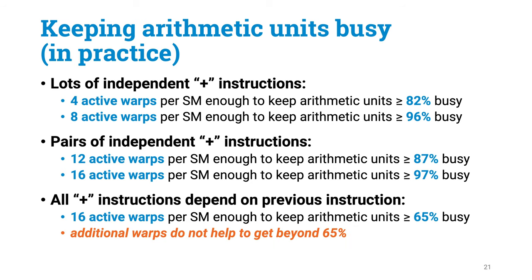You check the number of active warps, look at how much instruction-level parallelism there is, do the math, and what you get is usually at least 80% of what you would expect, often more than 95%. Unfortunately, going beyond 16 active warps in this task does not give more performance in practice. So if you have a long sequence of additions that depend on each other, the arithmetic units will be necessarily a bit idle — you can achieve maybe around 65% of the maximum arithmetic throughput, but you will need a little bit of instruction-level parallelism to get close to 100%.